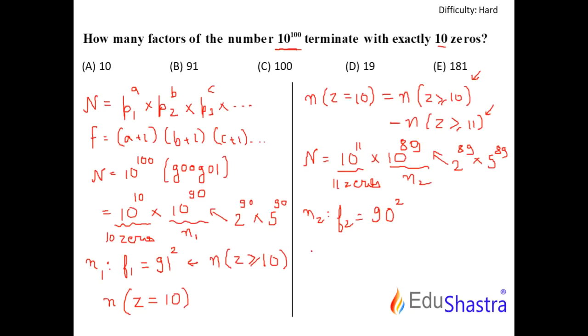So therefore, my required value, let's say X is equal to n for Z greater equal to 10, which I have obtained here as 91 square minus 90 square. If you quickly do the logic of a plus b, a minus b, you will get the value 181.